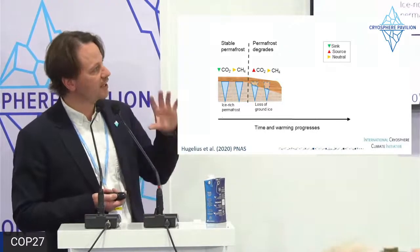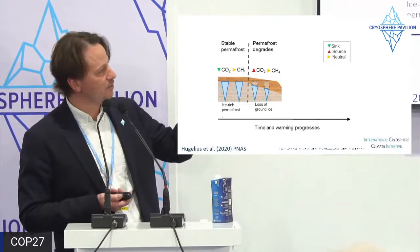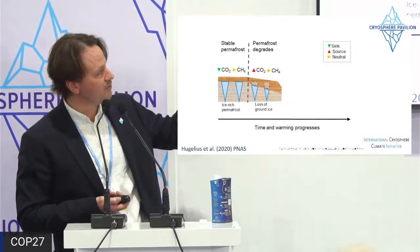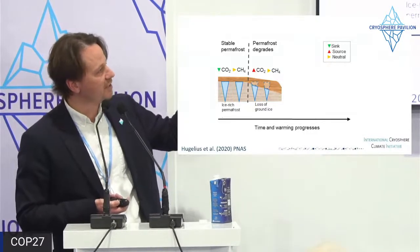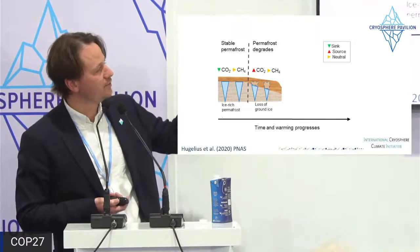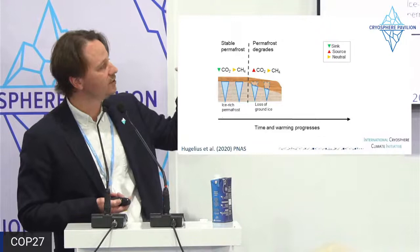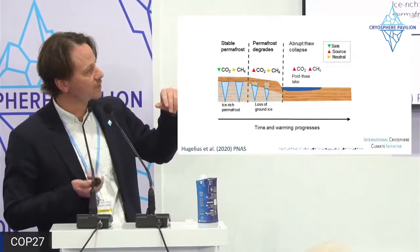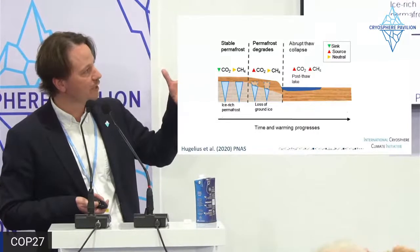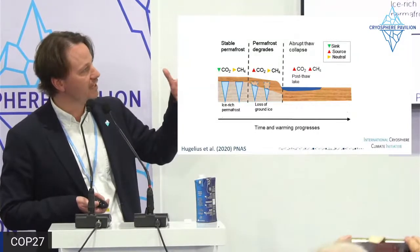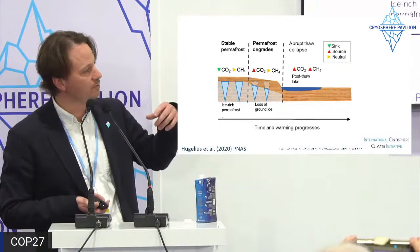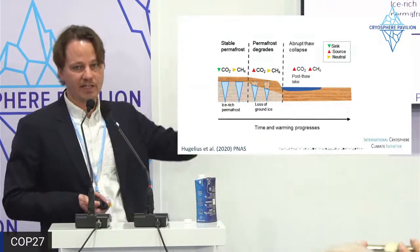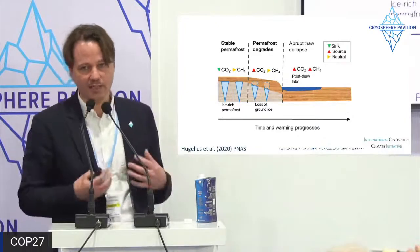Looking at what happens over time: on the far left you have stable permafrost, usually a sink of CO2 and near-neutral on methane. As permafrost starts to degrade it shifts to a source of CO2, and in peatlands can remain neutral on methane. But once it fully thaws and collapses into a post-thaw lake, it becomes a strong source of methane and also CO2. Over hundreds of years it would eventually become a CO2 sink again as the ecosystem becomes more productive, but on a timescale of a few hundred years it leads to stronger radiative forcing.